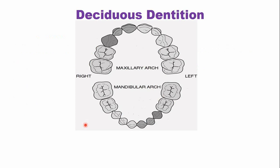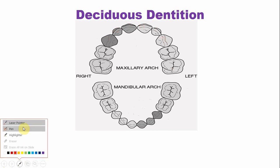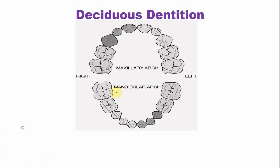This is a picture of the complete deciduous dentition. It is important that you should count the number of teeth in the deciduous dentition. So the total number of teeth — counting 1 through 10 — there are 10 teeth in the upper arch.